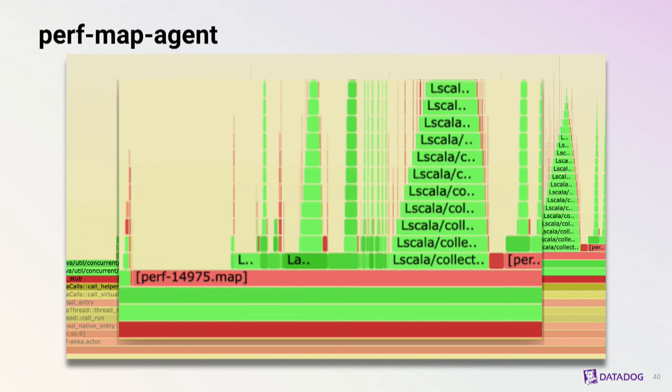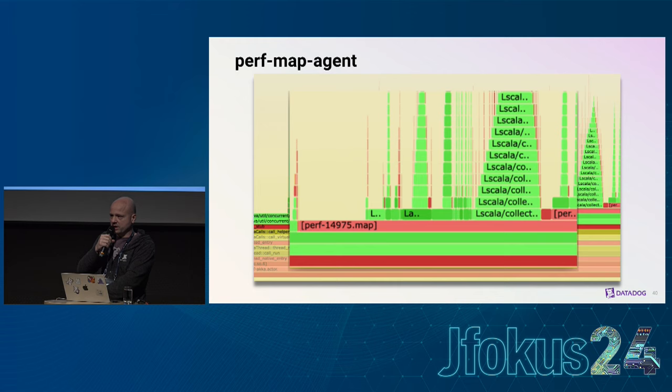Here's an example of a profile collected by perf using perf-map-agent — stack traces are much nicer, though using internal names. You can still figure out what's happening, but we're still getting some unrecognized frames because perf-map-agent cannot symbolize interpreted frames, since they were never compiled and we don't have a compilation event to map back.